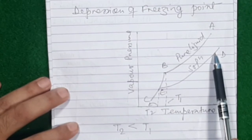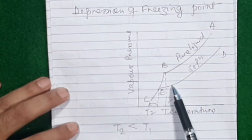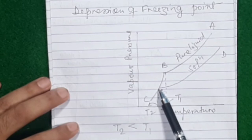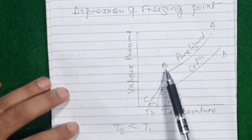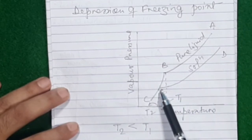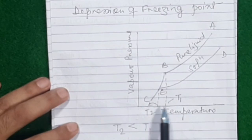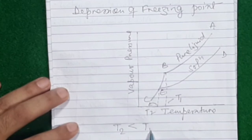Now I will take a solution of the same liquid. The vapor pressure-temperature curve of the solution will always be lower than that of the pure liquid because of lowering of vapor pressure. So the vapor pressure curve of the solution starts from the lower end. If the solution is constantly cooled, its vapor pressure-temperature curve comes down until it touches the vapor pressure-temperature curve of the solid state — at that point the solution also freezes. The corresponding freezing point of the solution is T2, which is naturally less than T1.